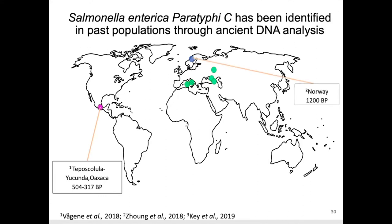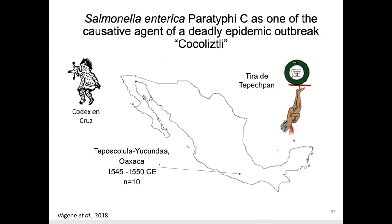Three studies have recovered the genome of this bacteria from teeth samples. The oldest genome reconstructed so far is from an individual from Norway. The second involved samples from Russia, Italy, and Turkey. The most recent is from two individuals from South Mexico. The identification of an ancient Salmonella enterica paratyphi C genome from burials linked to the Cocoliztli epidemic outbreak of 1545–1550 in Teposcolula, Yucunda, Mexico suggested it as one of the possible causes. Cocoliztli is a deadly disease of unknown cause, characterized by intense bleeding and high fever, estimated to have killed between 5 to 15 million individuals.